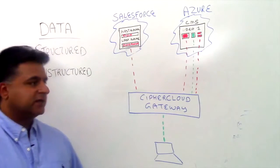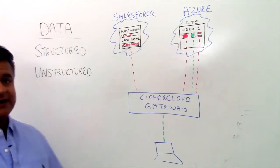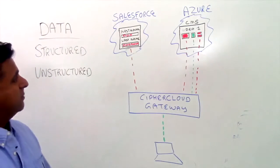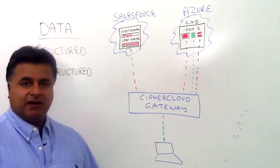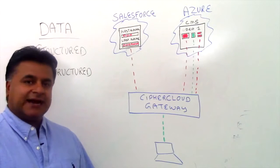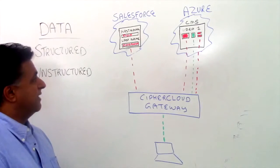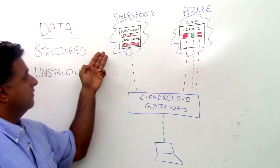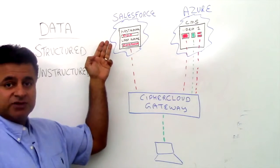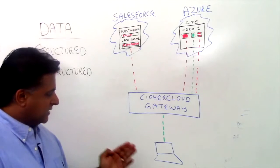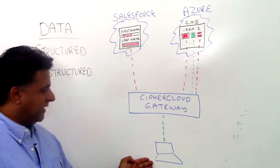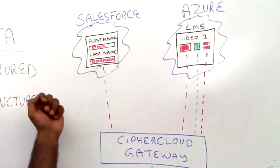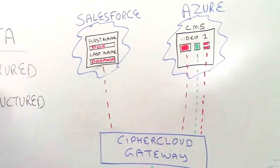I'd like to start out with the first classification of data called structured data. When we talk about structured data, it's really to the core of what we do with our applications such as Salesforce, who we partner with. Structured data can be thought of as letters and numbers as they're combined to form a word or other numeric values. Using the example of a first name and last name in a Salesforce form — Das is the first name and Dosanj the last name — as a person on the enterprise premise goes to the Salesforce page, they enter that value, it gets encrypted at our gateway and then sent to the Salesforce page where it is now in cipher text. That is what we reference as structured data.